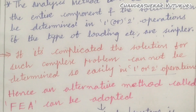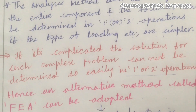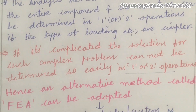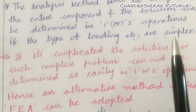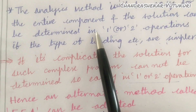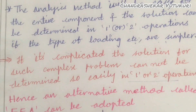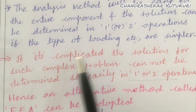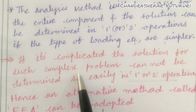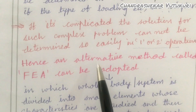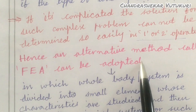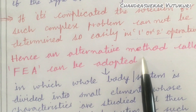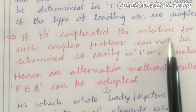Such complex problems cannot be determined so easily in one or two operations. We have to do some mathematical iterations until we get the solution — we do five, six, seven, eight iterations using different analysis methods. Here also, if the loading as well as the component is not simple, we cannot get the answer in one or two operations. So, for complex problems, an alternate method called finite element analysis can be adopted, or finite element methods can be implemented to work out the complicated solution, dear students.